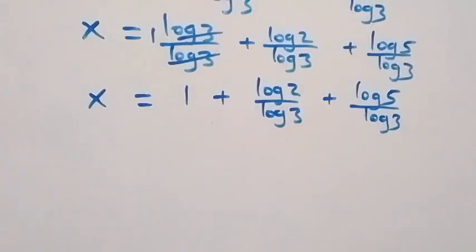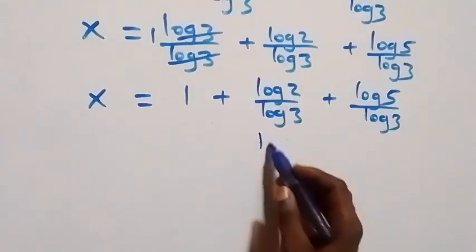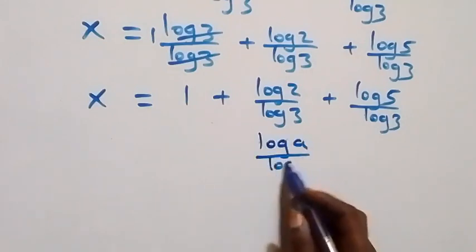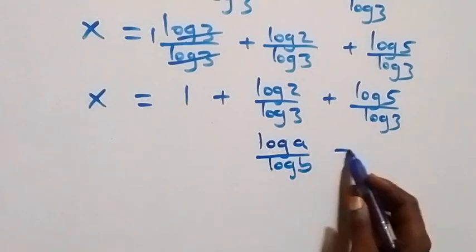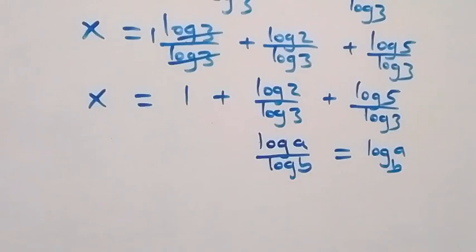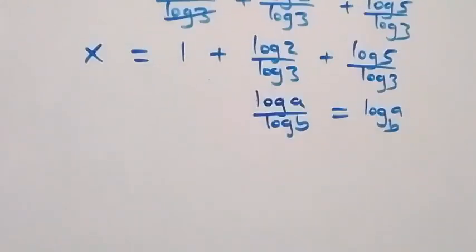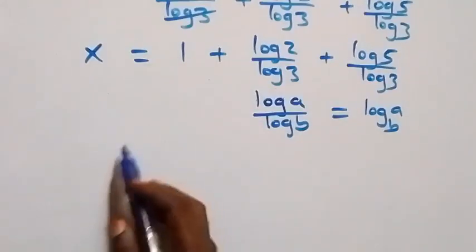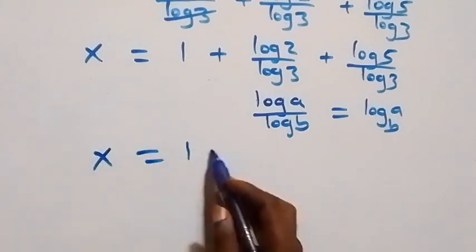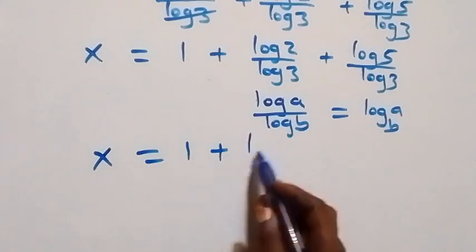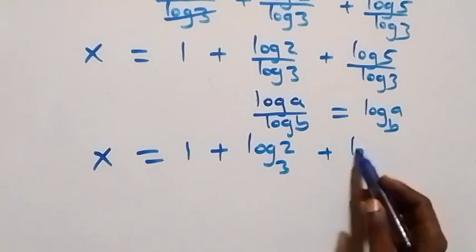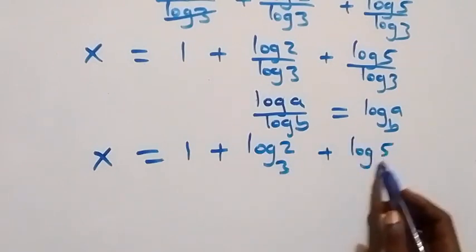Here we apply the change of base formula, where log a over log b can be written as log a to base b. So this becomes x equals 1 plus log 2 base 3, then plus log 5 base 3.